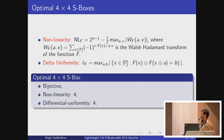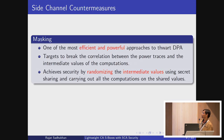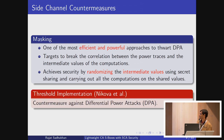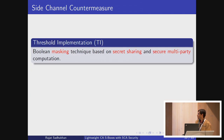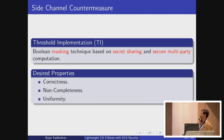Before going into the details, let me give some background. We call an S-box optimal if it follows the bijective property with non-linearity 4 and differential uniformity 4. For side-channel countermeasures, we randomize intermediate values using a secret sharing scheme. We followed a threshold implementation scheme for our S-box side-channel-resistant design, proposed by Nikova. This is a countermeasure against differential power analysis, based on secret sharing and secure multi-party computation, and has correctness, non-completeness, and uniformity properties.